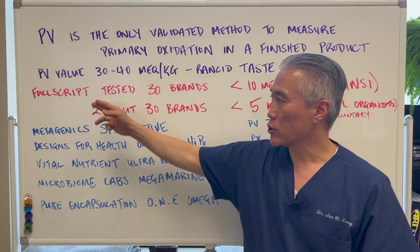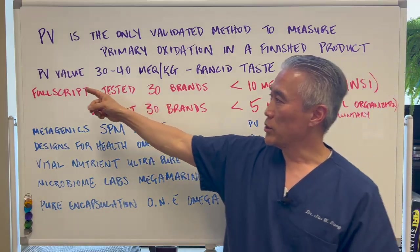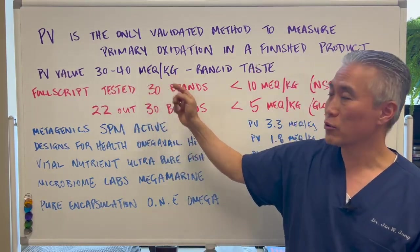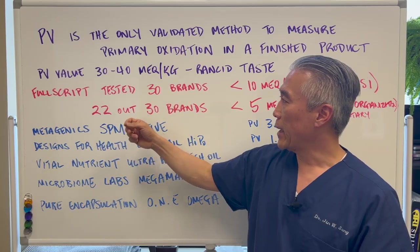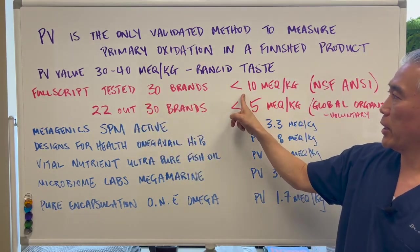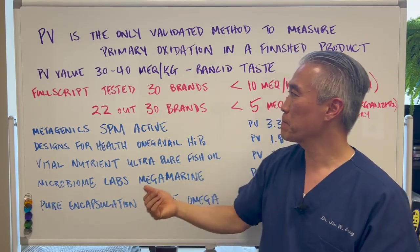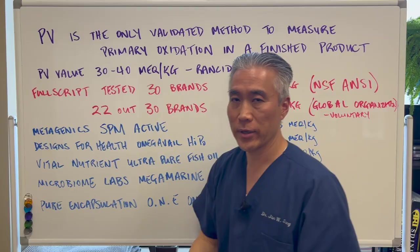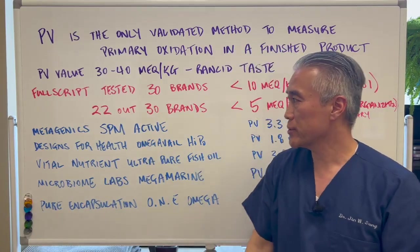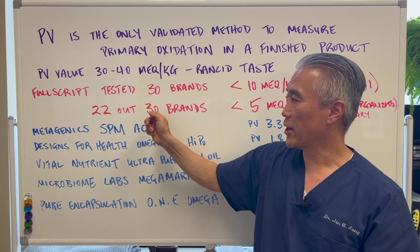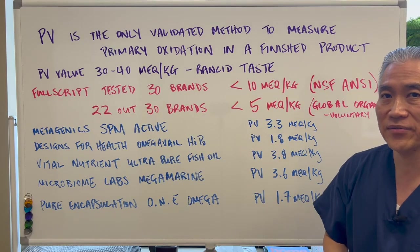There's a company called Fullscript and they tested 30 brands that they sell on their website. When you have a PV value between 30 and 40 MEQ per kilogram of fish oil, you're going to get a rancid taste. Fullscript tested 30 brands and all of them had a value less than 10 — that is the industry standard. Of the 22 out of 30 brands, they actually had a MEQ per kilogram of less than five, which is really excellent.